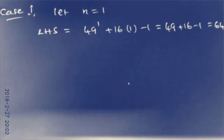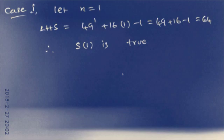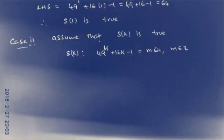We'll use mathematical induction. Case 1: Let n = 1. On the left hand side we have 49^1 + 16(1) - 1, which equals 64. Since 64 is divisible by 64, S(1) is true.